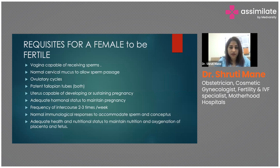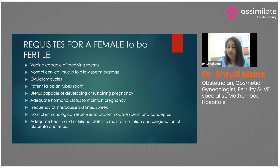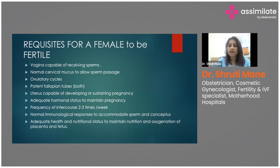The uterus should be well-developed and capable of sustaining a pregnancy. You should exclude cases of unicornuate uterus, or complete or partial septate uterus. You need to evaluate at every point what could be the cause of female infertility — it can be at the uterine level, tubal level, ovarian level, or cervical level.